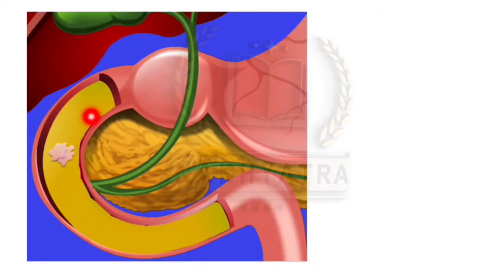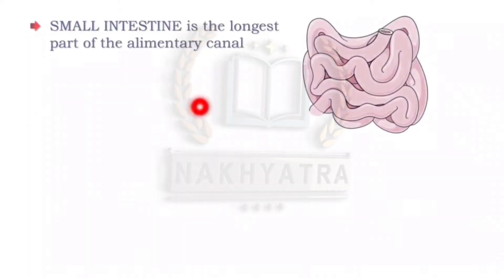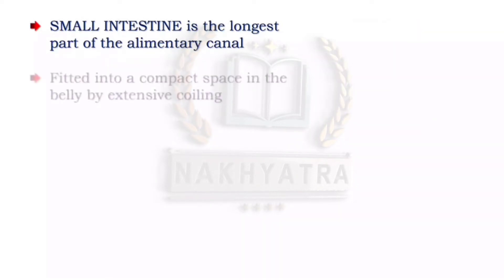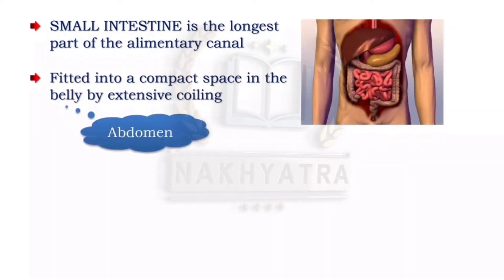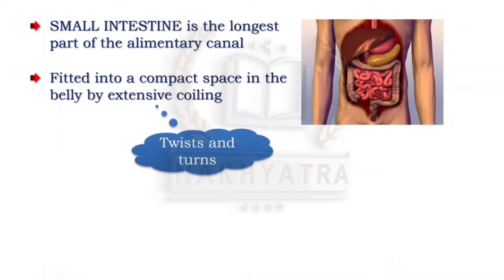As you can see here, this is the food entering into the small intestine from the stomach. This is the stomach and this is the small intestine. Small intestine is the longest part of the alimentary canal, which is about 5 to 6 meters long. It is fitted into a compact space in the belly, meaning abdomen, by extensive coiling — that is, twists and turns.